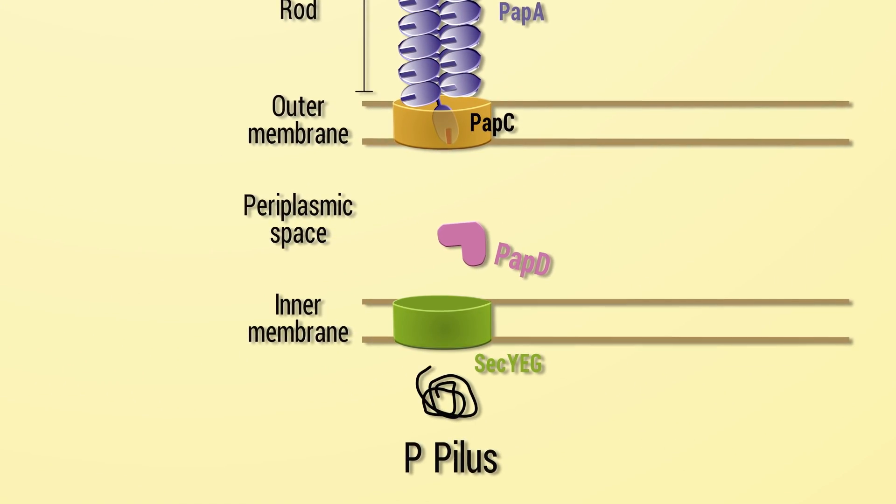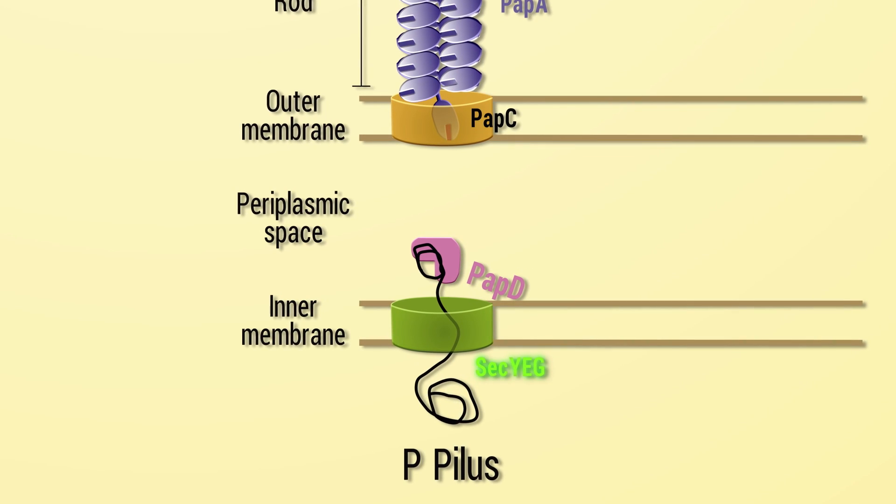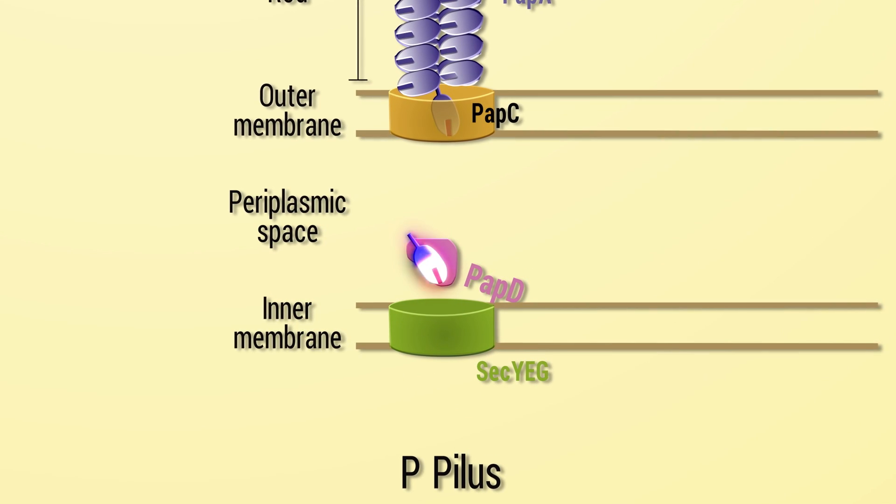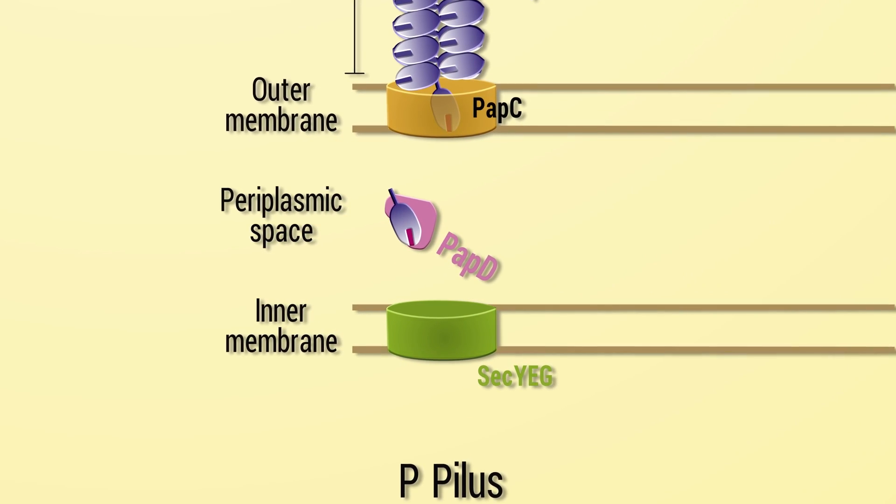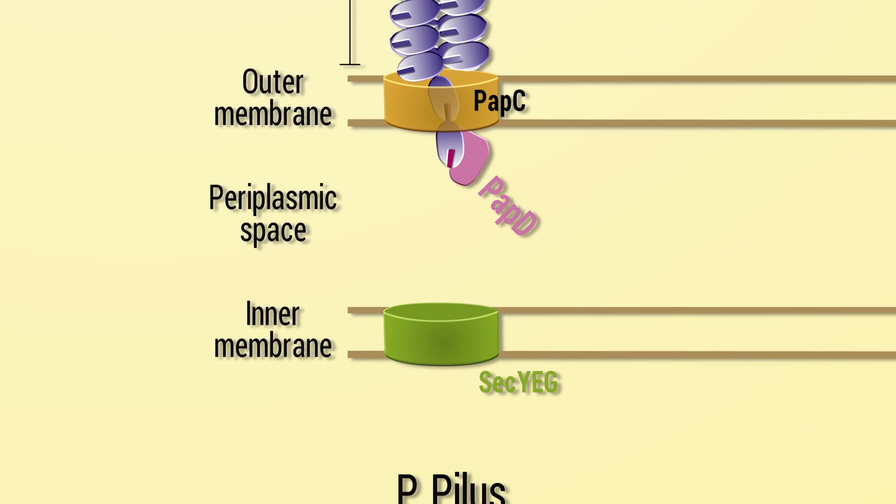Pilus subunits are transported to the periplasm through the SEC-YEG transporter in the inner membrane, where a chaperone assists in the folding and transport of subunits to the usher situated in the outer membrane.